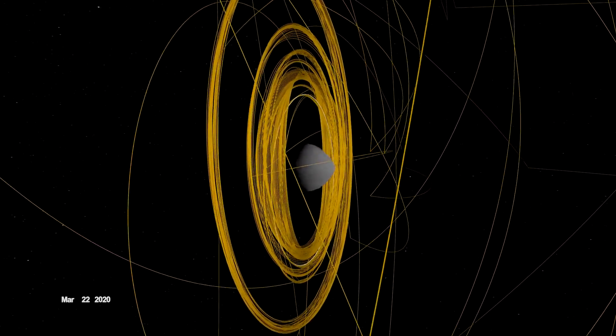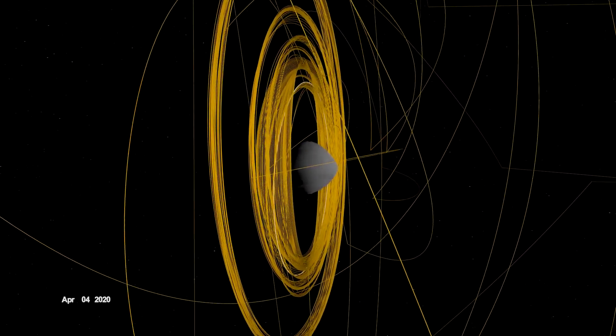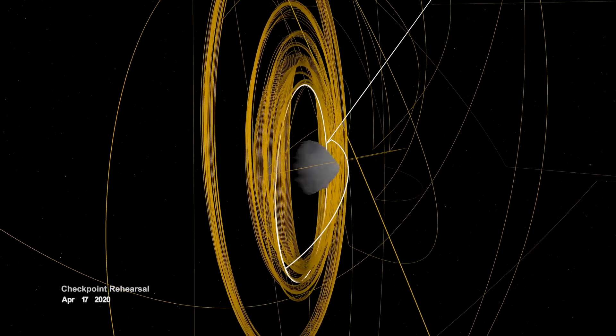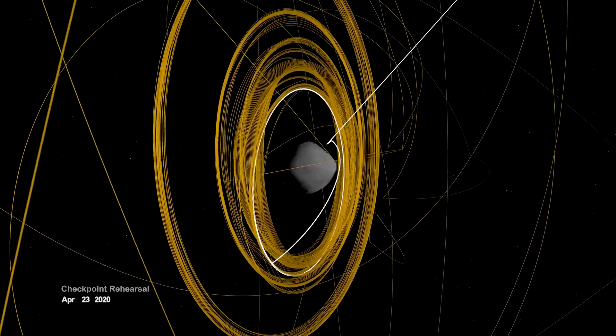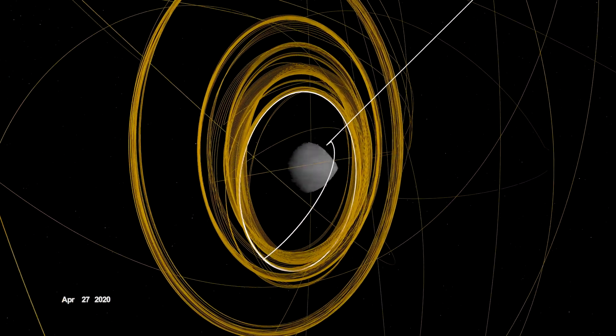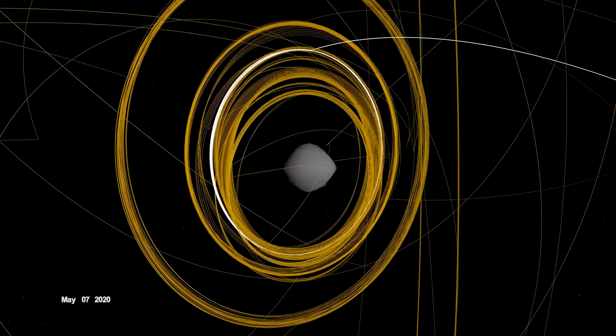In mid-April, OSIRIS-REx performed the first of two rehearsals prior to sample collection. It navigated to a predetermined checkpoint about 125 meters above Bennu, then descended to within 65 meters before backing away.